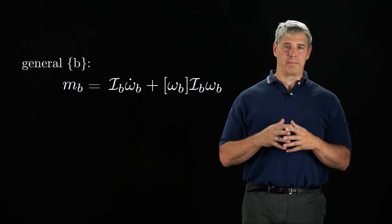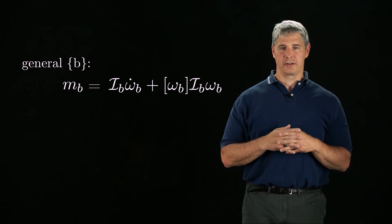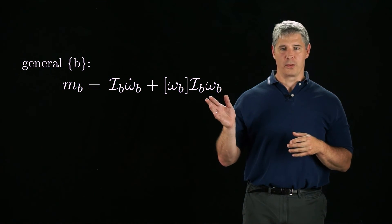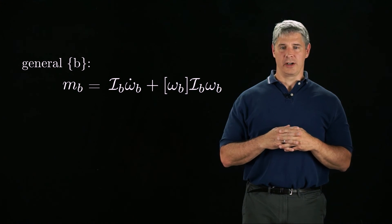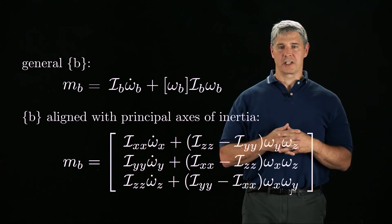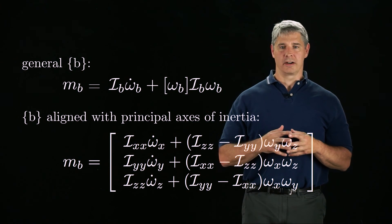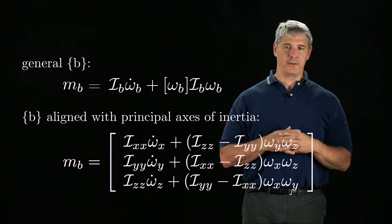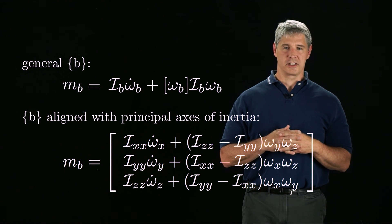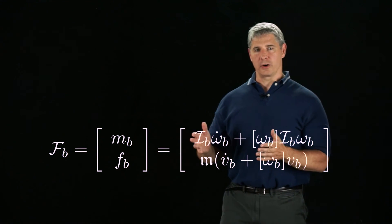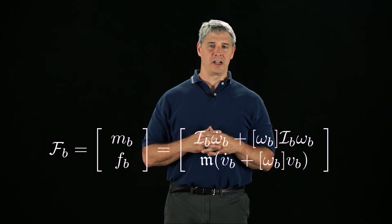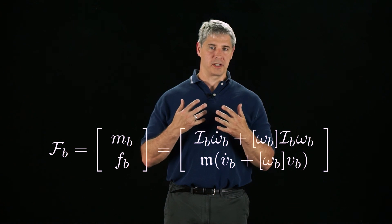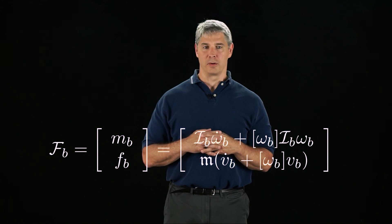For an arbitrary b-frame at the center of mass, the rotational equations of motion are what we derived before. If the b-frame is aligned with the principal axes of inertia, however, the equations can be expressed more simply, as you see here. This form involves many fewer multiplications, additions, and subtractions. To summarize, these are our equations of motion for a single rigid body. In the next video, we will study these equations further in preparation for using them for the dynamics of a robot.